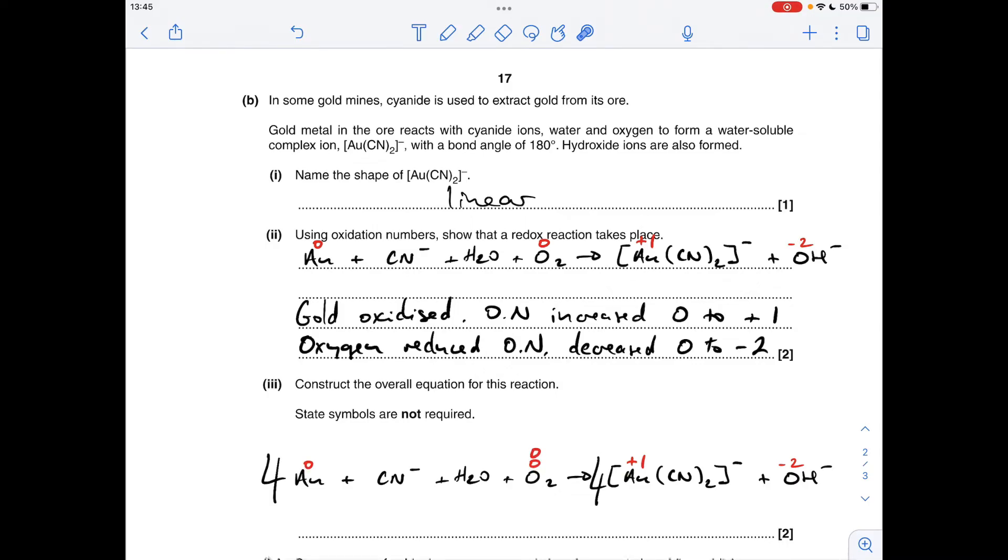Now we've got an overall increase of four, so each of those golds has gone from 0 to +1, and that matches the total decrease of four. Now we've done that it gets a little bit easier. If we think about the cyanide ions next, this four in front of the complex, obviously there's two within the complex, so we need eight CN⁻ ions. We can use overall charges now to get the OH⁻ ions balanced. We've got 8- overall on the left, 4-, so we need another 4- from this, so there's a four in front of the OH⁻ ions.